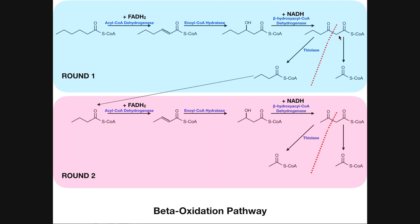So we've now produced a two-carbon acetyl CoA and a four-carbon acyl CoA. That makes sense: if we split something that was six carbons, we get four and two, and four plus two is six. The acetyl CoA will go into the Krebs cycle, but we're not done with the four-carbon acyl CoA — it's going to undergo a second round of beta-oxidation, except now instead of starting with six carbons, we're starting with four carbons.